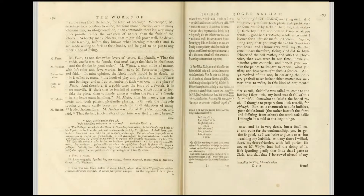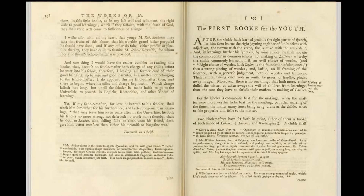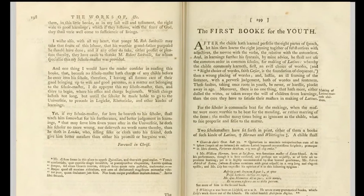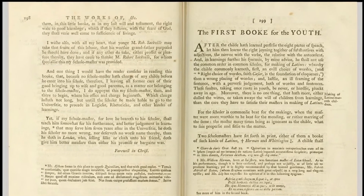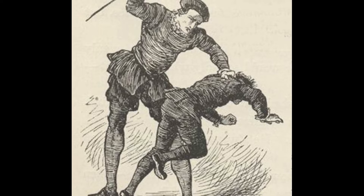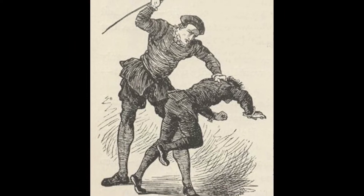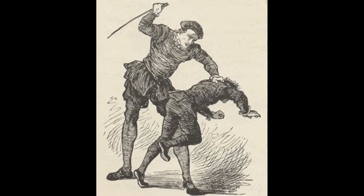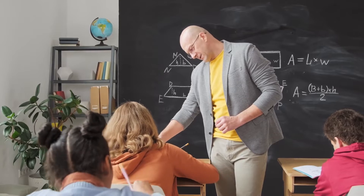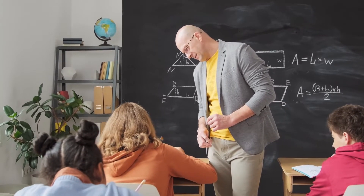In the first book of The Schoolmaster, Ascombe denounced cruel and common teaching practices of the time, like beating students for wrong answers. Ascombe argued that motivating students through fear was counterproductive. Instead, students learned better when given praise and encouragement.